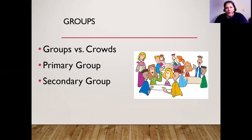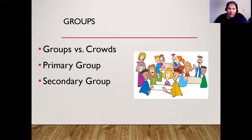Then there are secondary groups. Secondary groups are any groups that are not primary. When we think of secondary groups, we're thinking primarily of workplace associates and school, bowling teams — these are secondary groups. The bonds are not as strong and they are more temporary; they do not last as long. If you looked at this class as a secondary group, know that at the end of the semester these bonds are going to be terminated and we will no longer be a group.